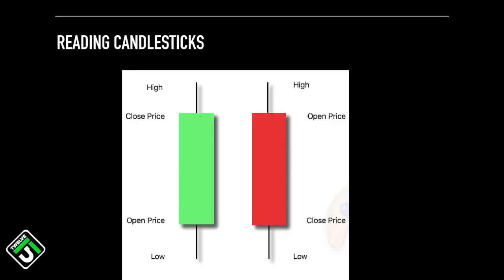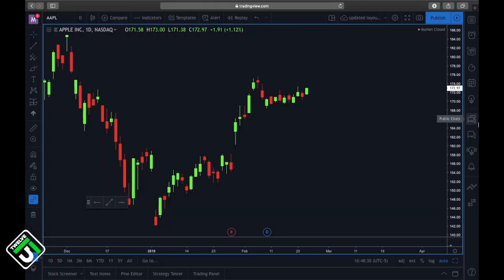A candlestick provides four pieces of information: the opening price, the closing price, the highest price, and the lowest price of a specific time period. And that time period can be anything you choose — it can be one month, one week, one day, or even one minute. This time frame is chosen when we pull up our charts, so when we open up our charting platform we should be able to change the time frame of whatever we want our candlesticks to represent.